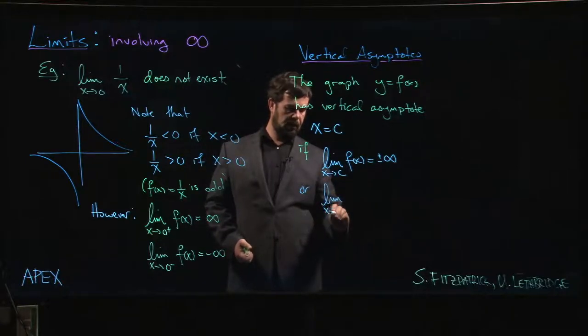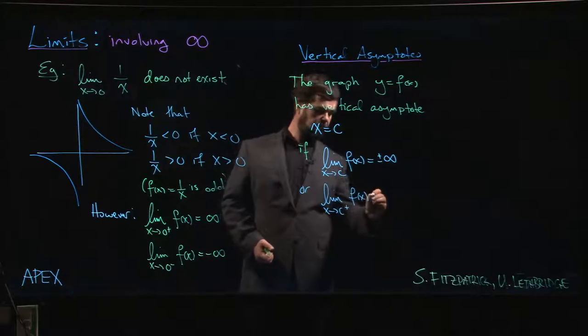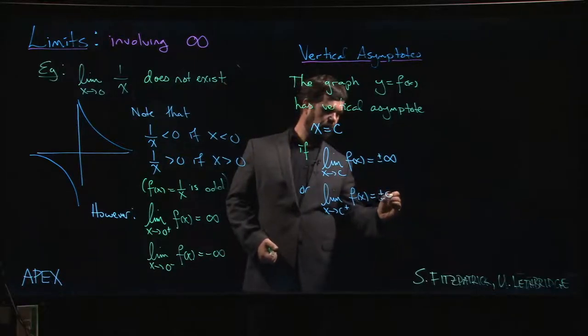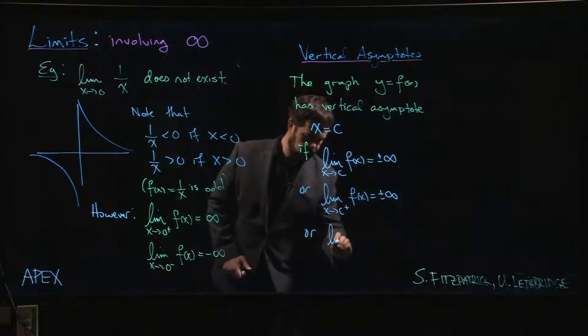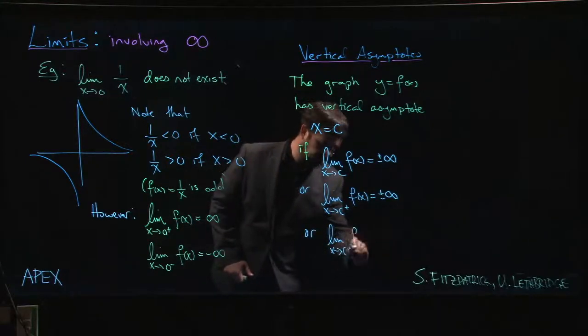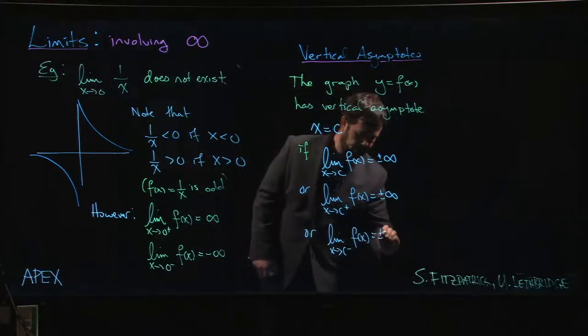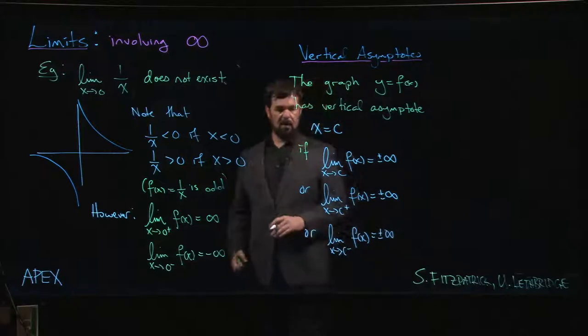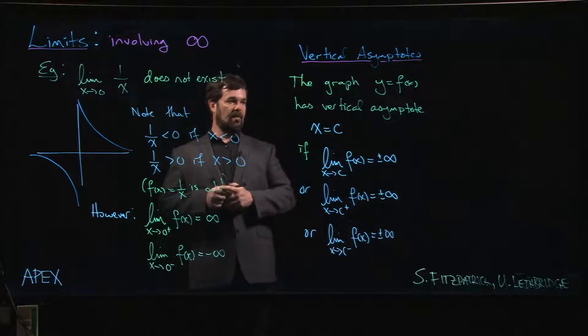Or if the limit as x approaches c from the right of f of x is plus or minus infinity, or if the limit as x approaches c from the left is plus or minus infinity. So if any one of these six possibilities happens, then we have a vertical asymptote for our graph at x equals c.